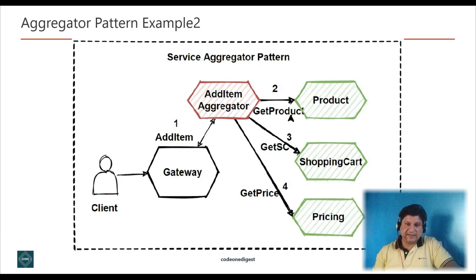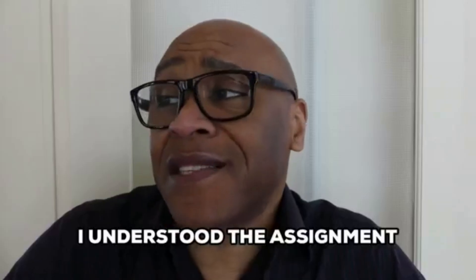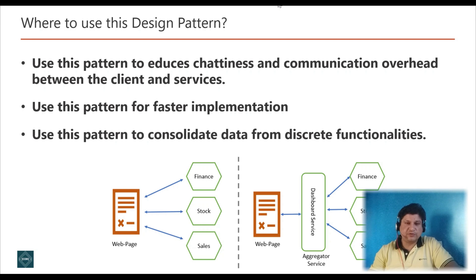Now let's understand the aggregator pattern with an e-commerce application example. Here, the aggregator microservice orchestrates the 'add item' call into a shopping cart operation. It aggregates requests to several backend microservices — product, shopping cart, and pricing microservices — centralizing its logic into an 'add item' aggregator microservice. This pattern isolates the underlying operation that calls multiple backend services.